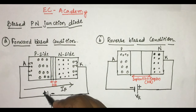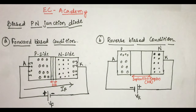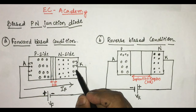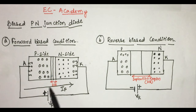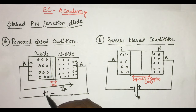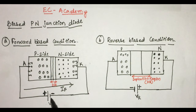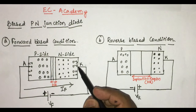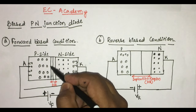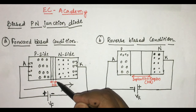First we'll try to understand what is forward bias condition. When the positive terminal of an external voltage source is connected to the p side of a diode, and the negative terminal of the external voltage source is connected to the n side of the diode, the condition is known as forward bias condition of a p-n junction diode. Under this condition, the holes from the p side are repelled from the positive terminal and driven towards the junction, and electrons are repelled by the negative terminal and driven towards the junction.